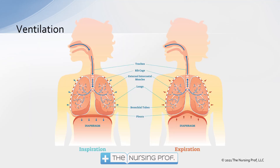Now we have our structures in place, and we need to get the air down into the lungs so that we can have ventilation and perfusion. Two separate processes are happening here. Ventilation is the movement of air — the inspiration, the air in, and the expiration, the air out. Air is coming in through the upper airways and down through the trachea, etc., down to the lungs. In order to get that air all the way down to those alveoli, it's important that we're having that contraction of the diaphragm and expansion of the chest wall.